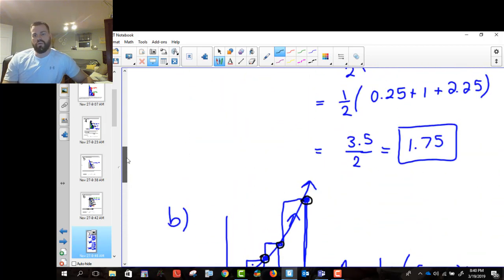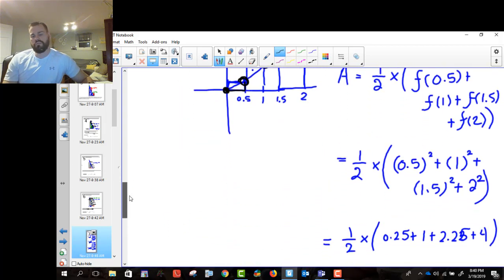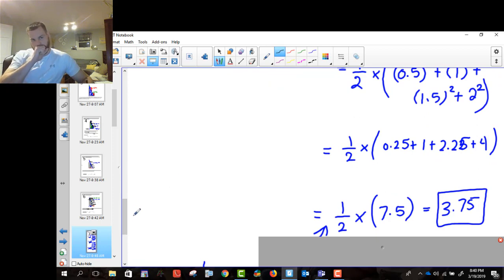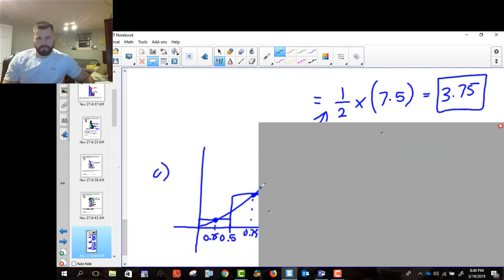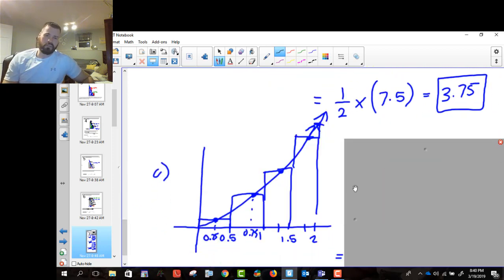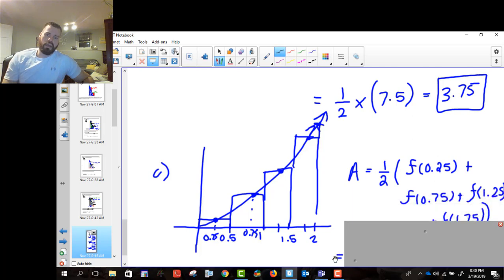And it comes out to, this one comes out to 3.75. So we got an answer of 1.75, we got an answer of 3.75. The midpoint is going to be, again, very similar, but the midpoint, we're going to start halfway between 0 and 0.5, okay, which is 0.25.